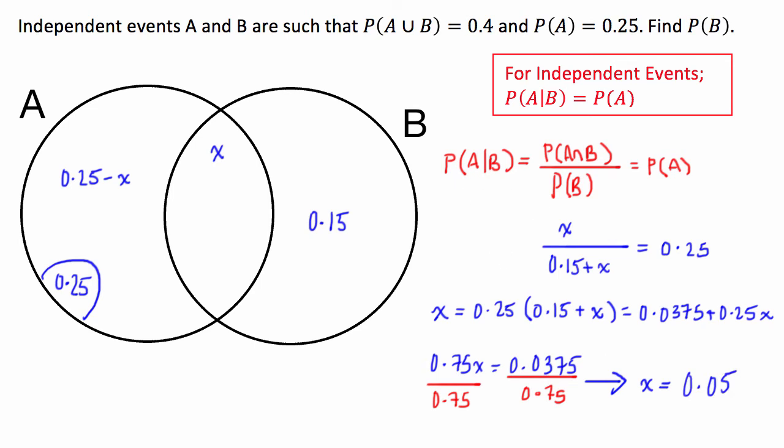So what we can do is we're going to sub that into our Venn diagram. And so this one here, 0.25 takes 0.05 is going to be 0.2. And so the probability of B, we can say, therefore, the probability of B is equal to 0.15 plus 0.05 or 0.2.